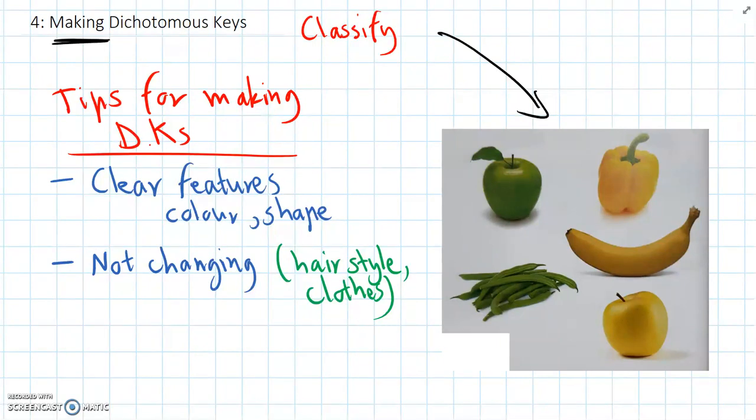We want to pick features that stay the same. So things like how tall someone is or their shoe size, things like that.